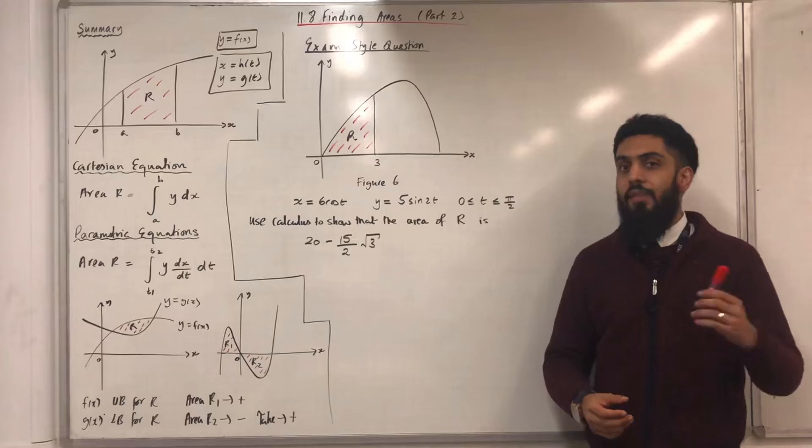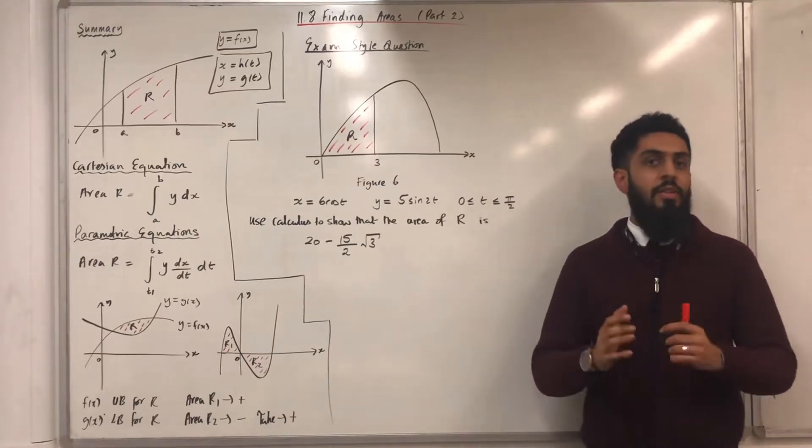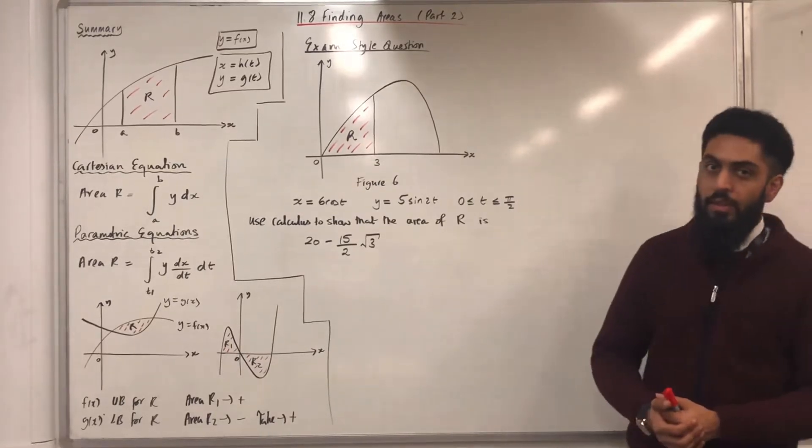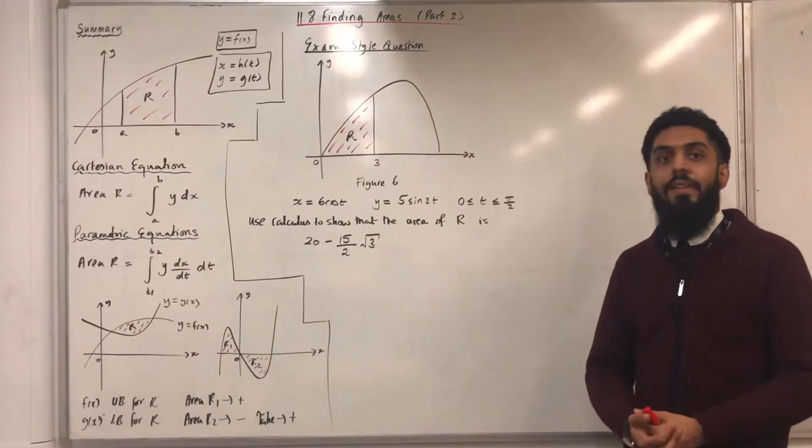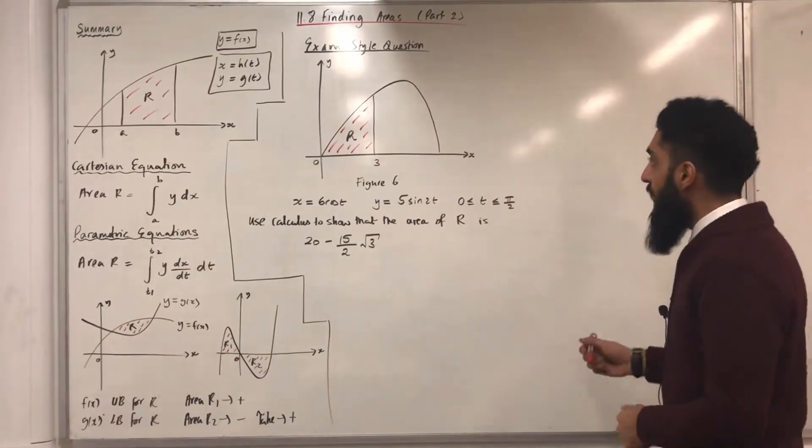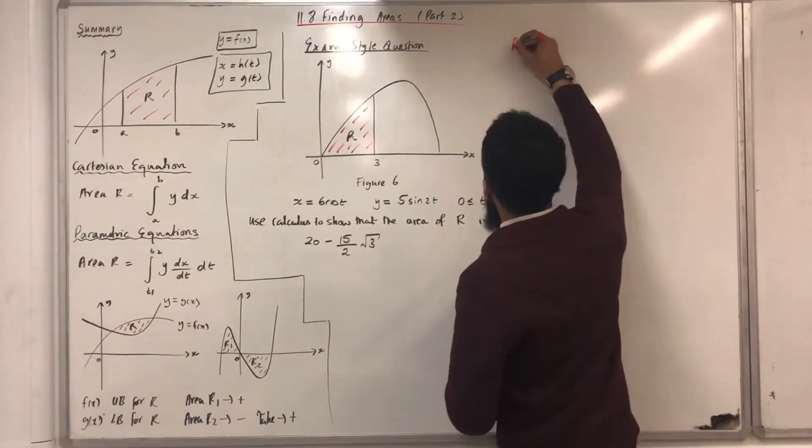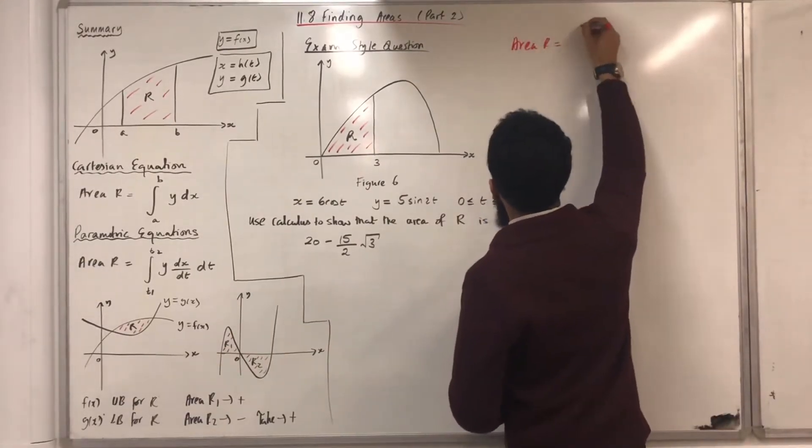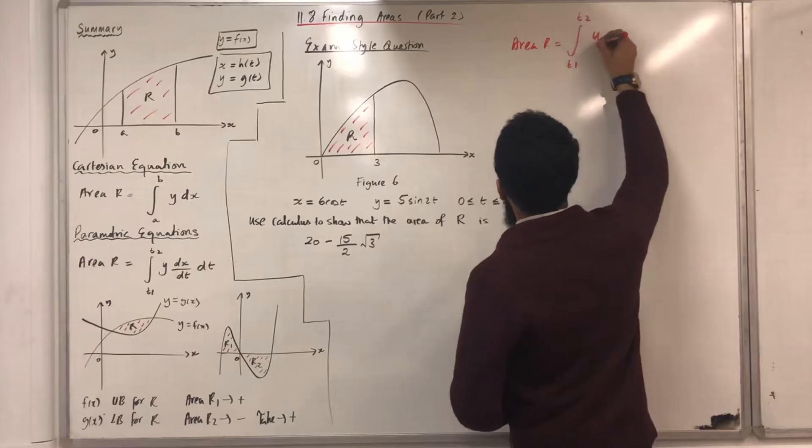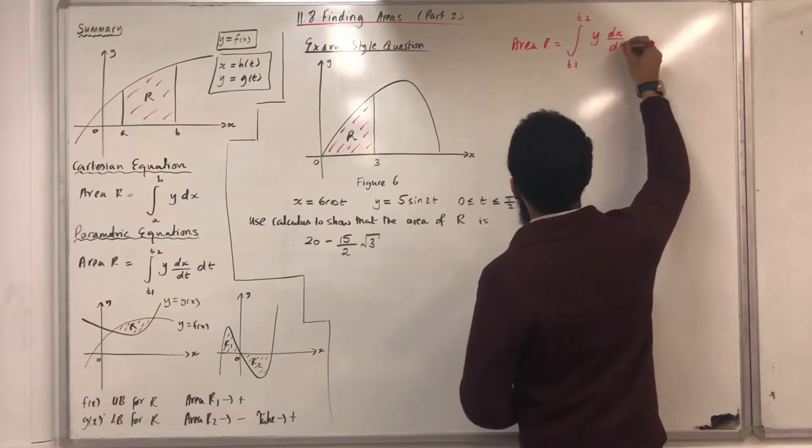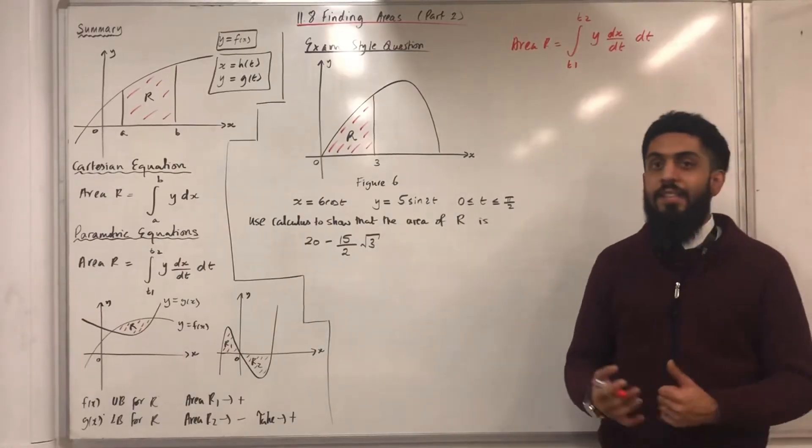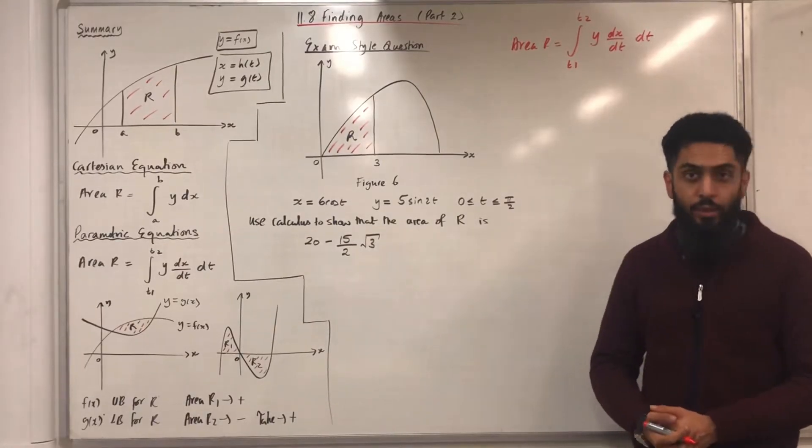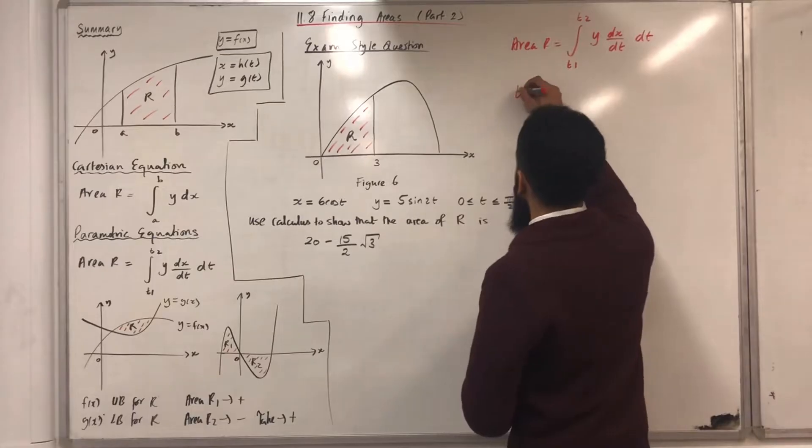Now, calculus can be integration or differentiation. You need to select the suitable technique of calculus. Over here, we are working out an area. Therefore, we select integration. To find the area of R, we need to take the integral from t1 to t2 of y dx over dt dt. The next step is to find the t limits, t1 and t2.